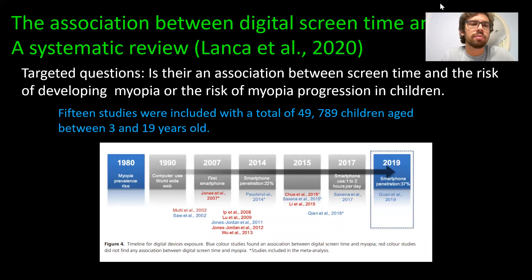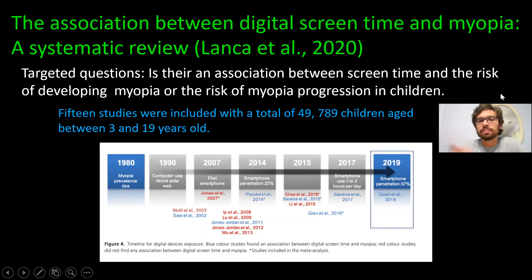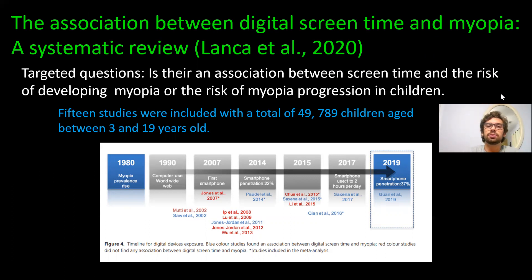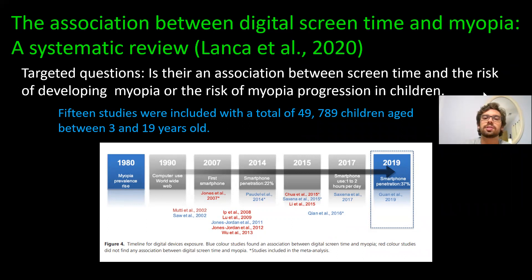The first article I reviewed is 'The Association Between Digital Screen Time and Myopia: A Systematic Review,' by Lanza et al., 2020. The targeted question was: is there an association between screen time and the risk of developing or progressing myopia in children? This was a review of 15 different studies with a total of 49,789 children aged between three and 19 years old. Most of the age range falls within adolescence, and it's close to 50,000 subjects — a very robust study.